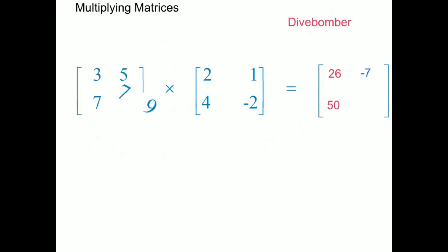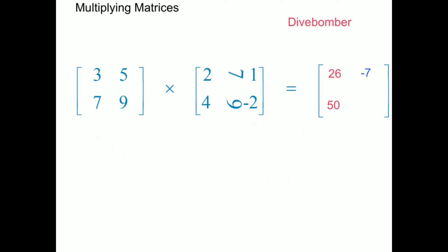Now the 7 and the 9 from row 2 of the first matrix also have to dive bomb the 1 and negative 2 — column 2 of the second matrix. We get 7 times 1 plus 9 times negative 2, and the answer is negative 11. This negative 11 is row 2 column 2 of the answer matrix.